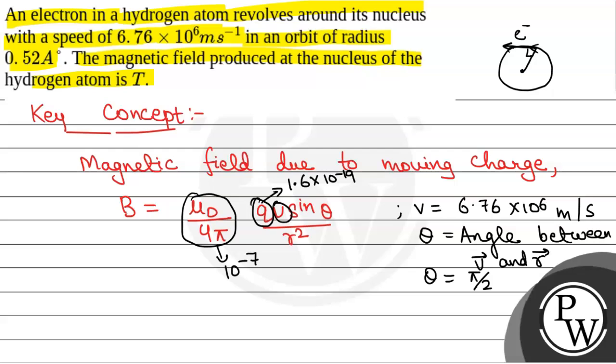So sin theta will be sin pi by 2, and r is the radius, given as 0.52 angstrom, which is equal to 0.52 times 10 to power minus 10 meters.